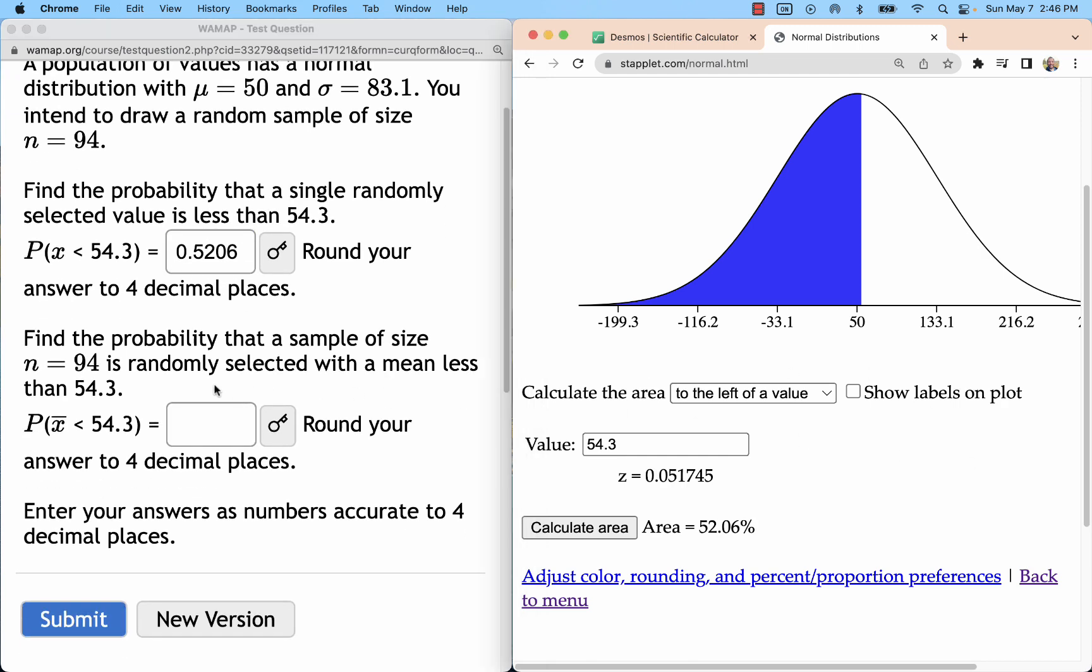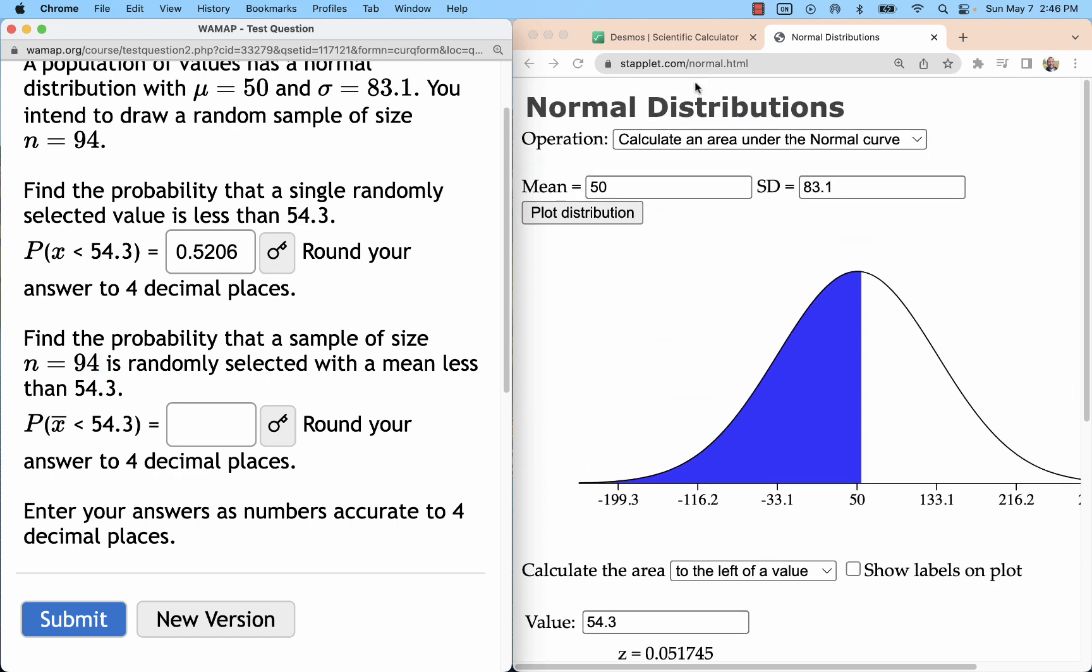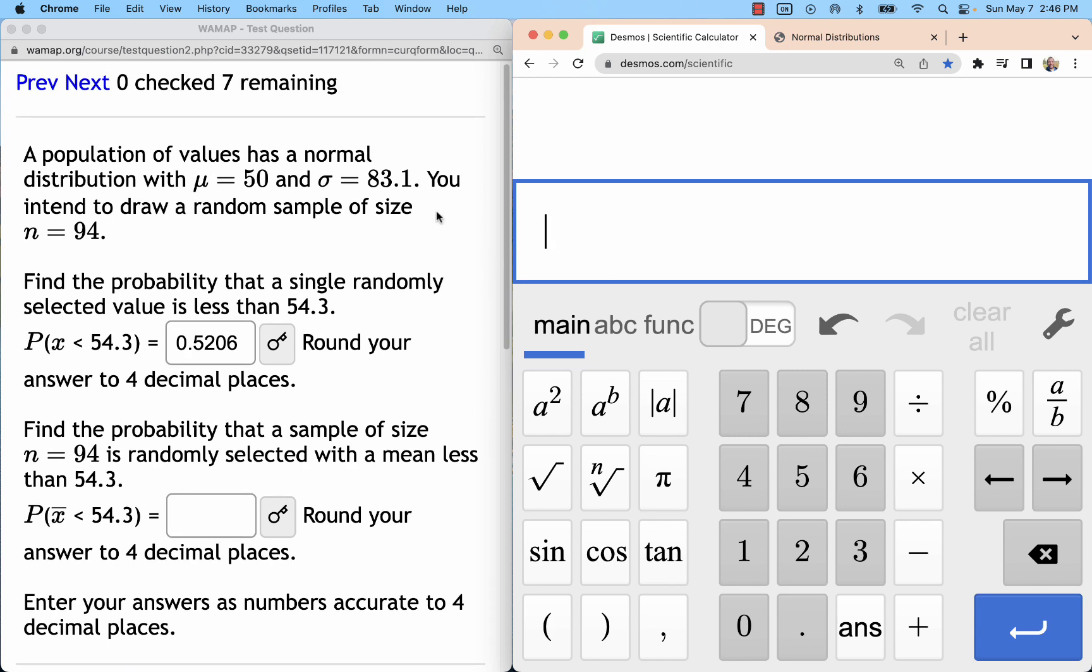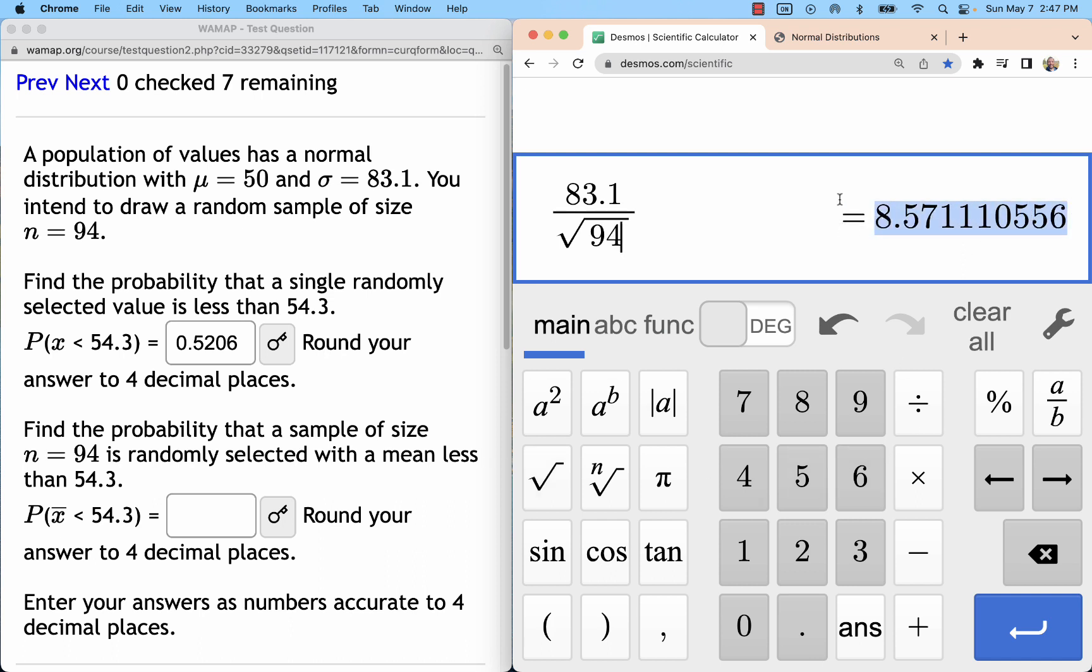Next, I want to compare sample means when samples of 94 individuals are collected. The only way to account for this is to find the standard error where we take the original standard deviation, that was 83.1 here, divide it by square root of the sample size 94. This gives me a figure called standard error. This is the standard deviation for samples of 94 when we're comparing the means. So that's why the probability inside that parentheses goes from x to x bar. Instead of looking at individual values, we're comparing sample means.